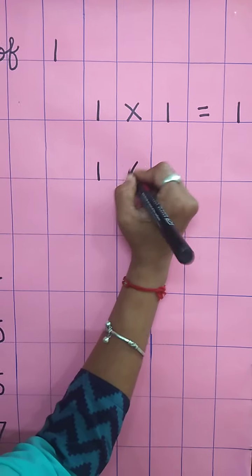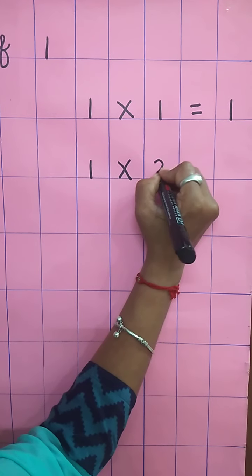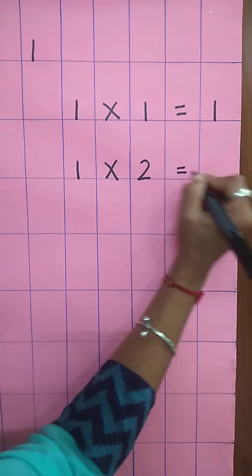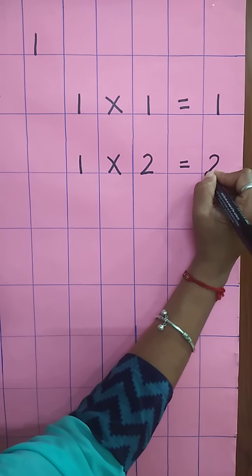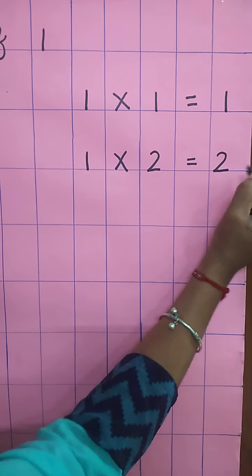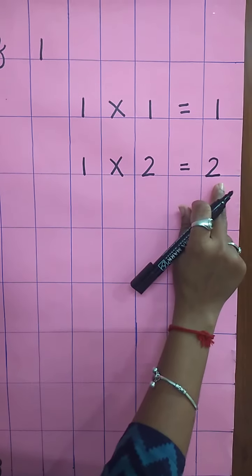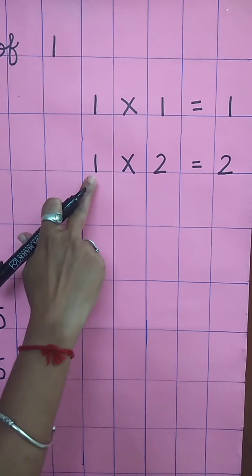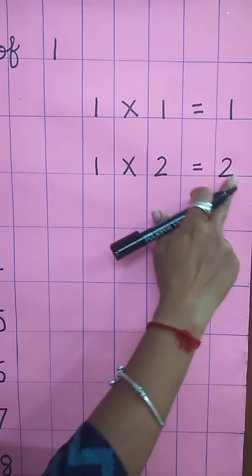One, twos are two. Write properly. One twos are two. Speak and write, children. One twos are two.